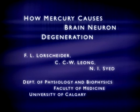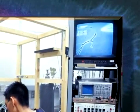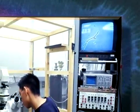How Mercury Causes Brain Neuron Degeneration. Mercury has long been known to be a potent neurotoxic substance, whether it is inhaled or consumed in the diet as a food contaminant.